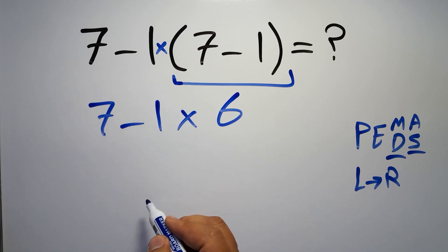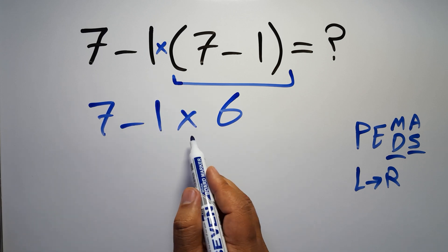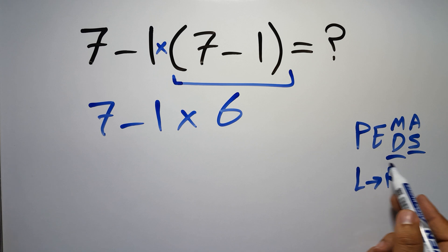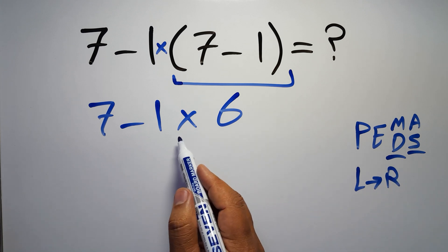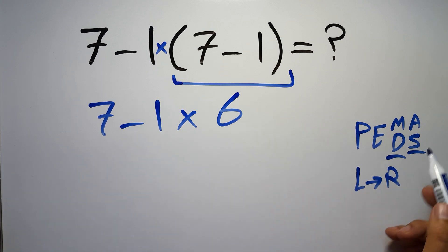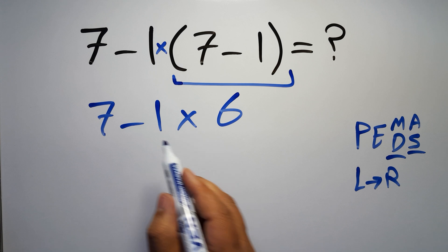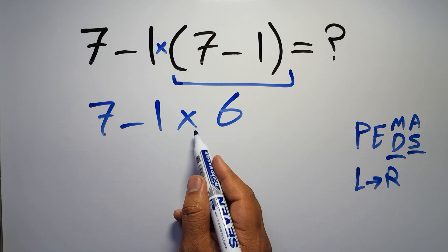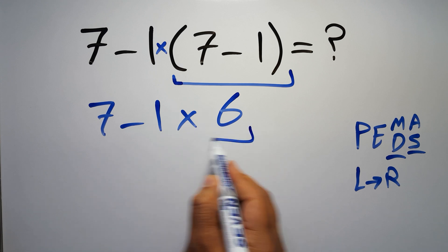Now we have one subtraction and one multiplication. According to the PEMDAS, multiplication has higher priority than subtraction because multiplication comes before subtraction. So here first we have to do this multiplication: 1 times 6 is just 6.